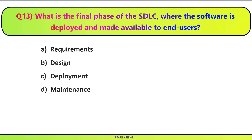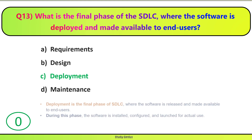Question 13. What is the final phase of SDLC where software is deployed and made available to end-users? SDLC ka final phase kaunsa hai, jahan software ko deployed aur available kiya jata hai end-users ko? Correct answer is C. Deployment is the final phase of SDLC, where the software is released and made available to end-users. During this phase, the software is installed, configured, and launched for actual use.